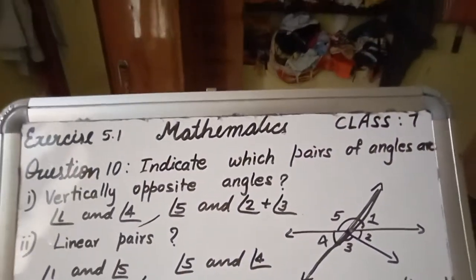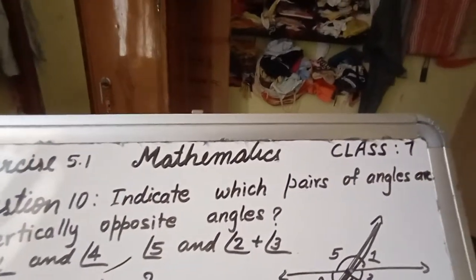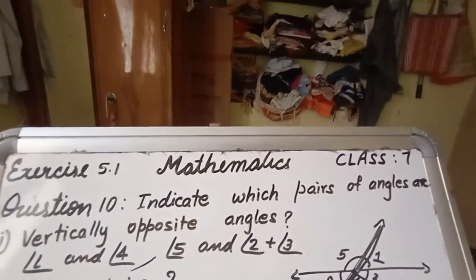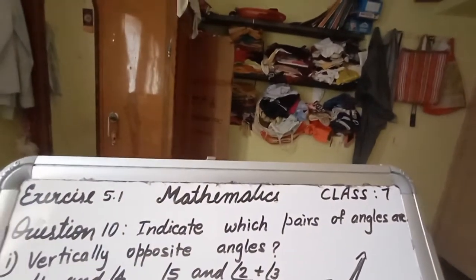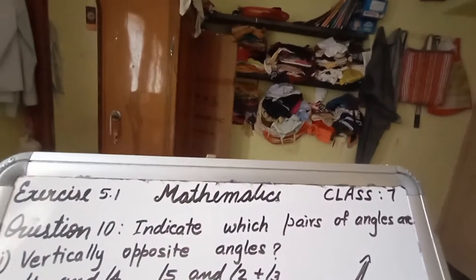Dear students, let us begin exercise 5.1 mathematics class 7, question number 10. In that, indicate which pairs of angles are vertically opposite.